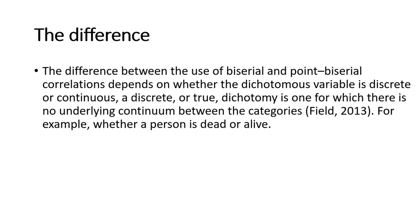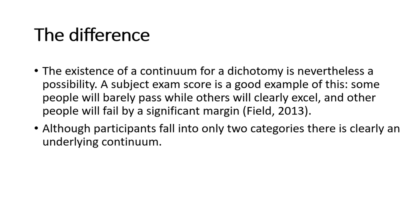The difference between the use of biserial and point biserial correlation depends on whether the dichotomous variable is discrete or continuous. A discrete or true dichotomy is one for which there is no underlying continuum — the word continuum is very important. A subject's exam score is a good example of this. According to Andy Field, some people will barely pass, others will clearly excel, and others will fail by a significant margin. So pass and fail categories exist, but the marks attained lie on a continuum, even though participants fall into only two categories.